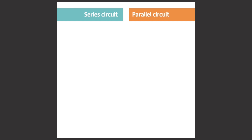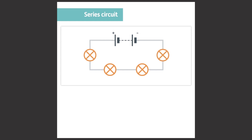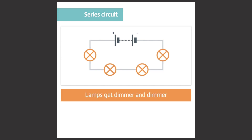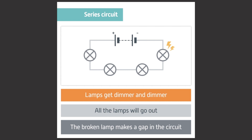Let's revise what we mean by series and parallel circuits. A circuit with two lamps in series has those two lamps within one loop. The circuit goes from the power supply to the first lamp, then to the second lamp and back to the power supply. When you add more and more lamps in series, you will find that the lamps get dimmer and dimmer. Also, if one lamp were to break, then all the lamps will go out, because a broken lamp makes a gap in the circuit.